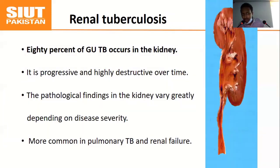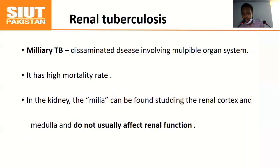Now we'll discuss renal tuberculosis. 80% of genitourinary TB occurs in the kidney. It is progressive and highly destructive over time. Pathological findings in the kidney depend on the severity of disease and are more common in pulmonary TB or in immunocompromised patients such as those with renal failure. When TB involves multiple organs it is called miliary TB, which has a high mortality rate. In miliary TB, granulomas are found in the renal cortex and medulla, but this does not usually cause renal infection on its own.